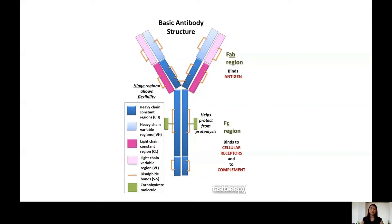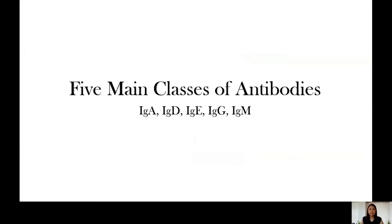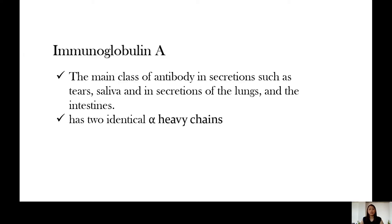The name of the antibody is determined by the type of heavy chains they have. We have five main classes: IgA, IgD, IgE, IgG, and IgM — where Ig stands for immunoglobulin, and the letters A, D, E, G, and M indicate the type of heavy chain. Immunoglobulin A is the main class of antibody found in secretions such as tears, saliva, and secretions of the lungs and intestines.